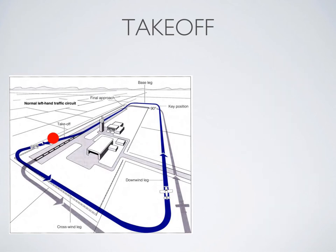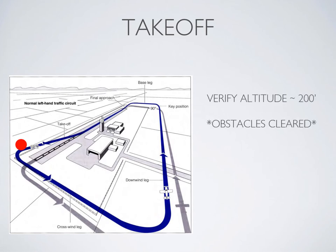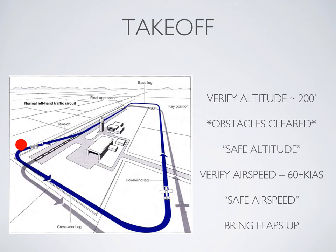Once in the climb out, maintaining the runway heading or noise abatement heading, look out the window and confirm obstacles have been cleared — normally at approximately 200 feet AGL. Once confirmed, call out 'safe altitude,' then glance at your airspeed indicator to confirm you're above a safe airspeed, call out 'safe airspeed,' and bring the flaps up.